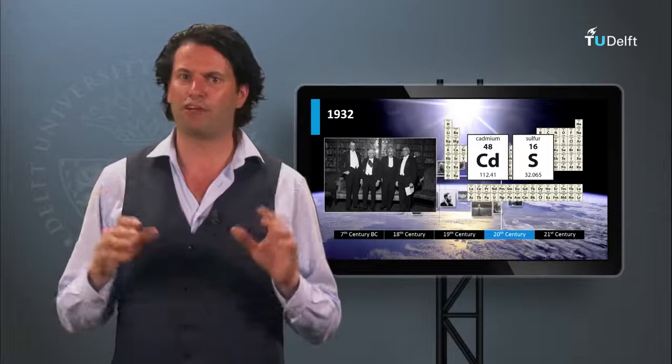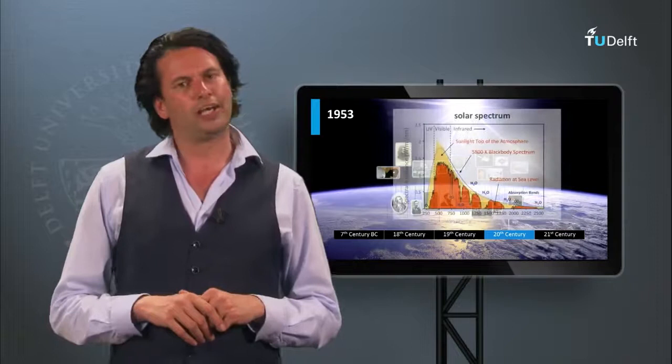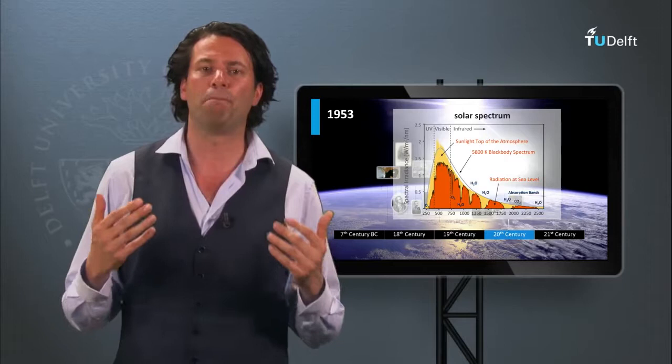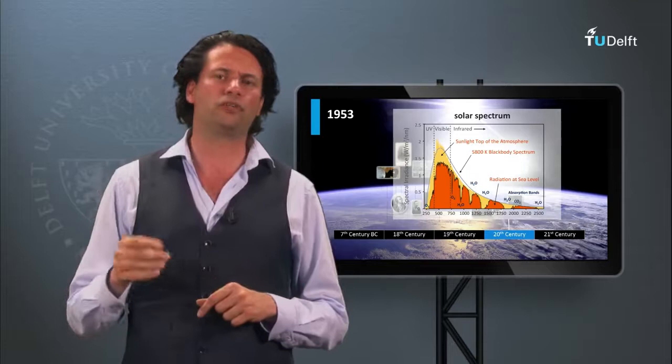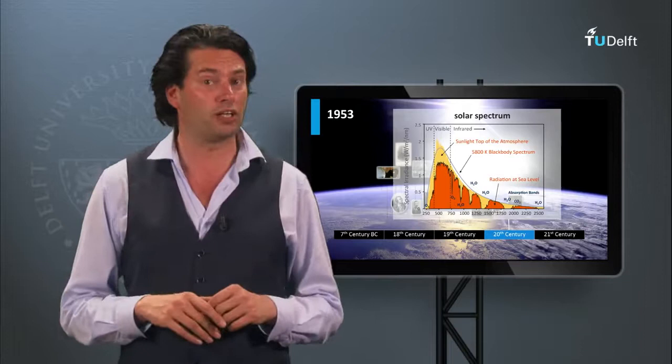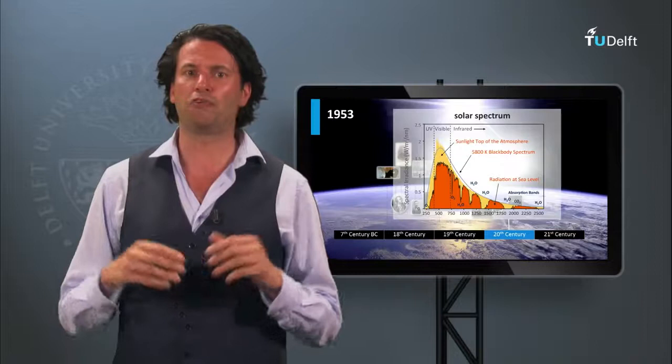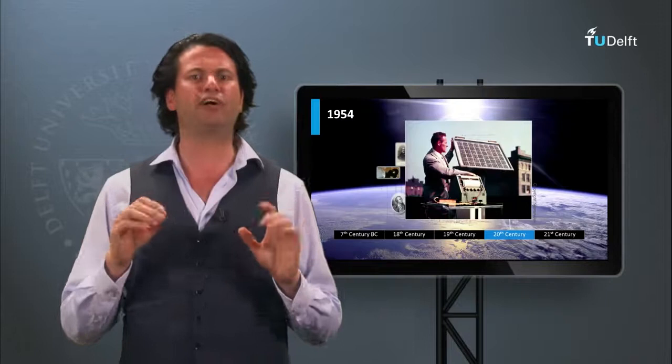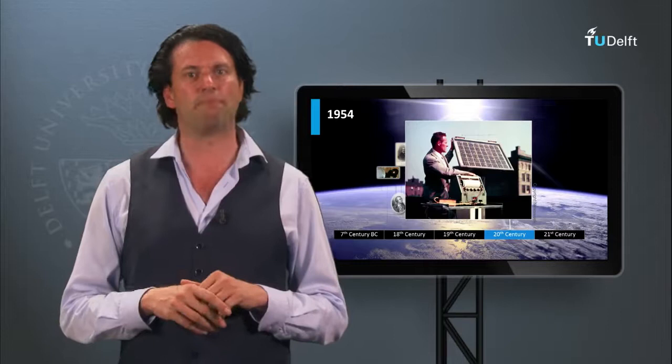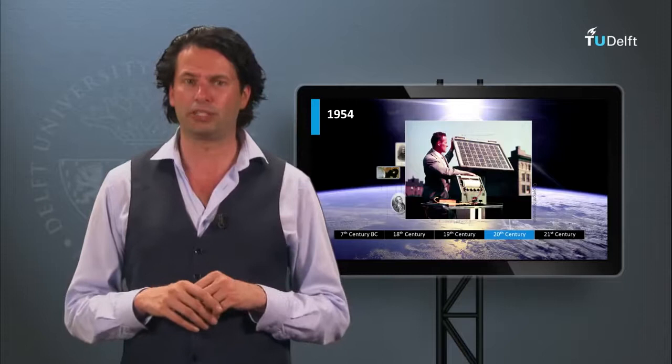It took up to 1953 for the potential performance of solar cells made of various materials with various bandgaps to be estimated. Dr. Don Trivich of Wayne State University performed theoretical calculations in reference to the solar spectrum. In week 3 of this course we will come back to such estimations. The real development of modern photovoltaic devices as we know them today started at Bell Labs. In 1954 Bell Telephone Laboratories produced a silicon solar cell with a light-to-electricity conversion efficiency of 4%, and they later achieved 11%.